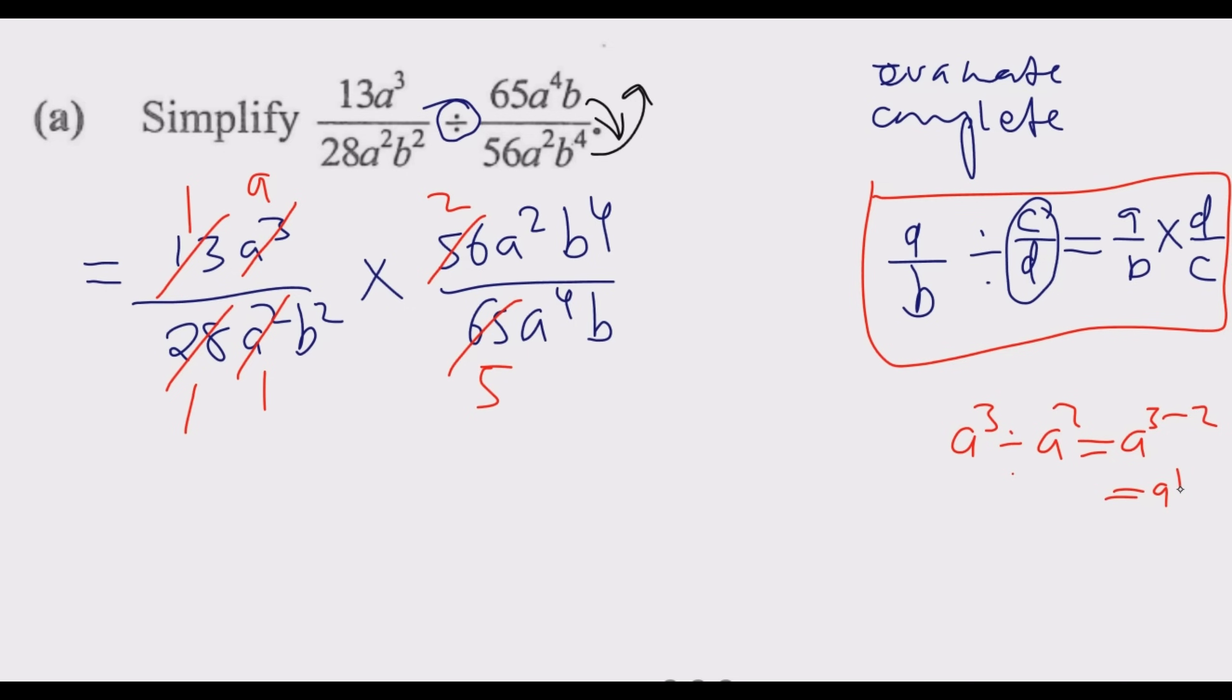Then on this side: a² into a² is 1, a² into a⁴ is a². For b: b into b is 1, b into b⁴ is b³. Then b² into itself is 1, b² into b³ is b. Then we just simplify and multiply.